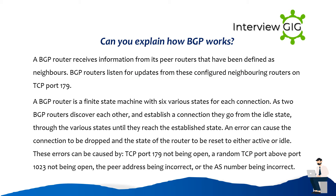Can you explain how BGP works? A BGP router receives information from its peer routers that have been defined as neighbors. BGP routers listen for updates from these configured neighboring routers on TCP port 179. A BGP router is a finite state machine with six various states for each connection. As two BGP routers discover each other and establish a connection, they go from the idle state through the various states until they reach the established state. An error can cause the connection to be dropped and the state of the router to be reset to either active or idle.